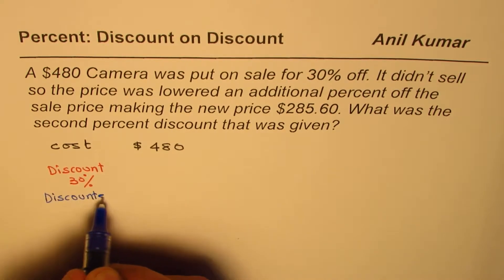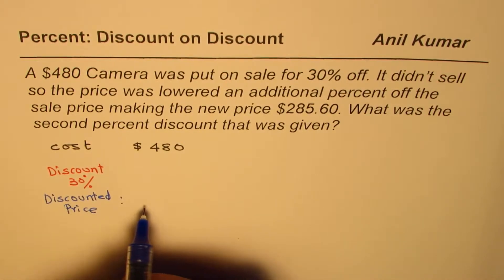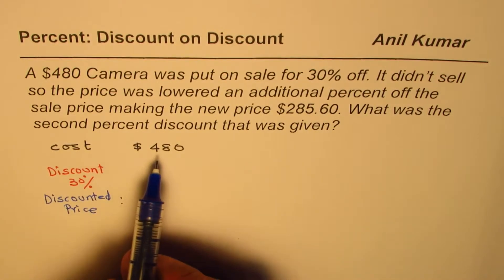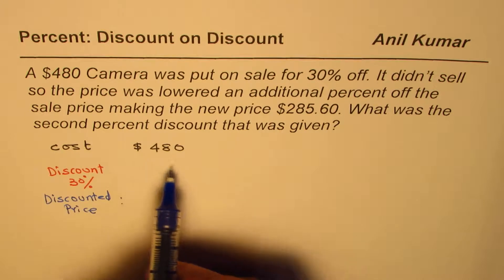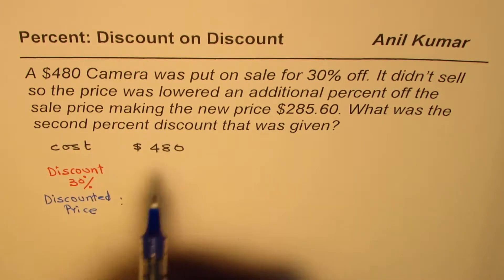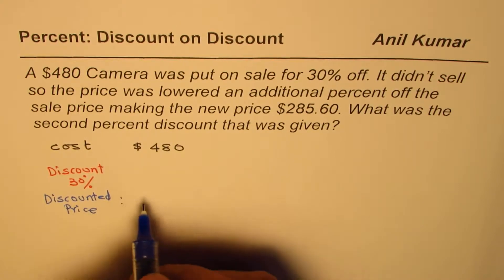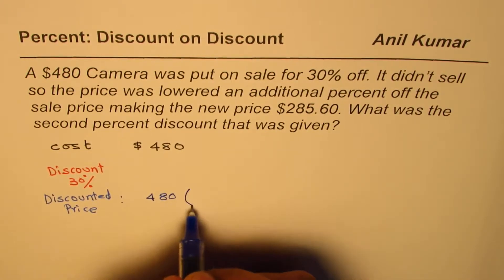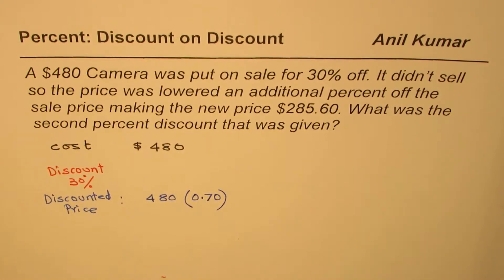When writing the discounted price directly, we need to understand that discount is 30%, so therefore you pay 70% of the whole cost — that's 100 minus 30. So the discounted price is 480 times 70%, or 0.70. This approach helps to quickly get the equations and solve questions, especially when working with multiple choice questions.